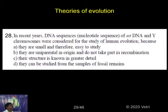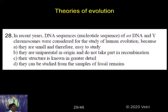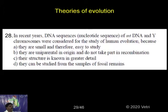In recent years, DNA sequences, nucleotide sequences of DNA and Y chromosomes were considered for the study of human evolution. The options are: A) they are small and therefore easy to study; B) they are uniparental in origin and do not take part in recombination; C) their structure has greater detail; D) they can be studied from samples of fossil remains.